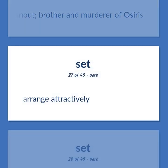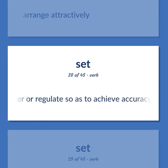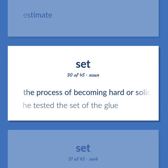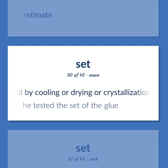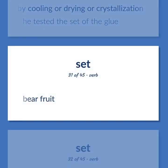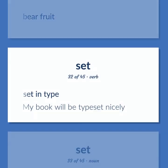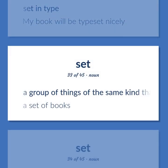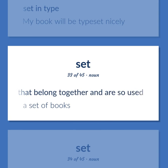Arrange attractively. Alter or regulate so as to achieve accuracy or conform to a standard. Estimate. The process of becoming hard or solid by cooling or drying or crystallization. He tested the set of the glue. Bare fruit. Set in type. My book will be typeset nicely. A group of things of the same kind that belong together and are so used. A set of books.